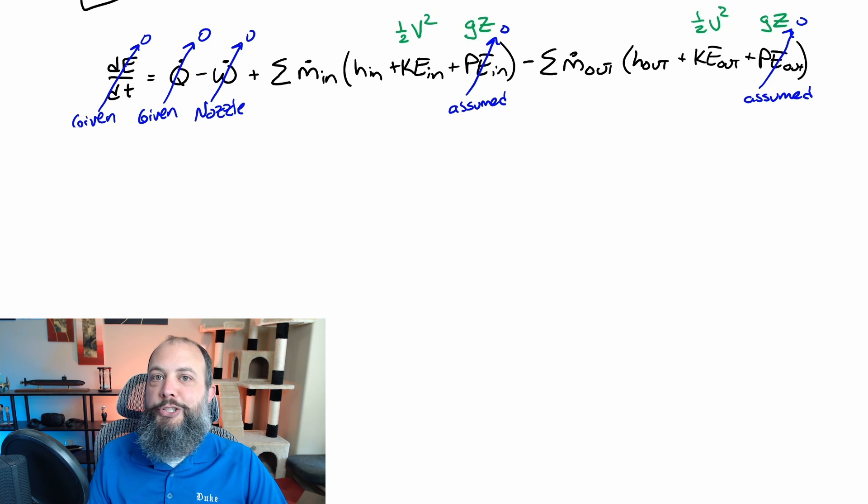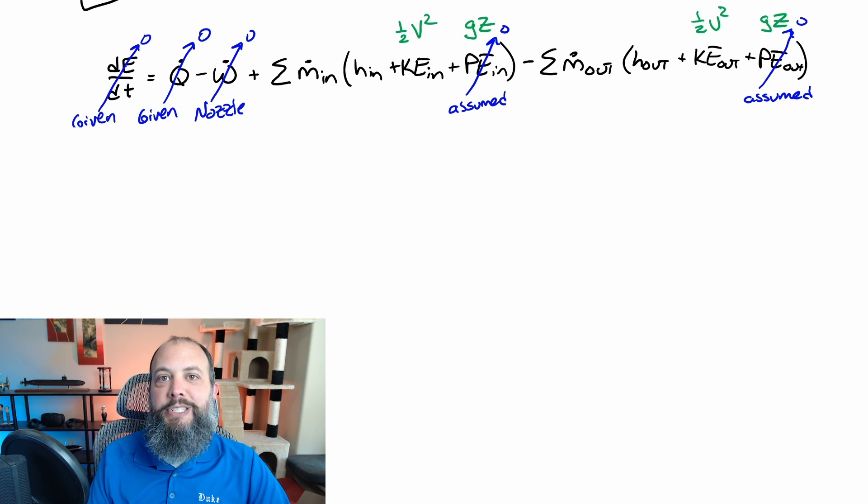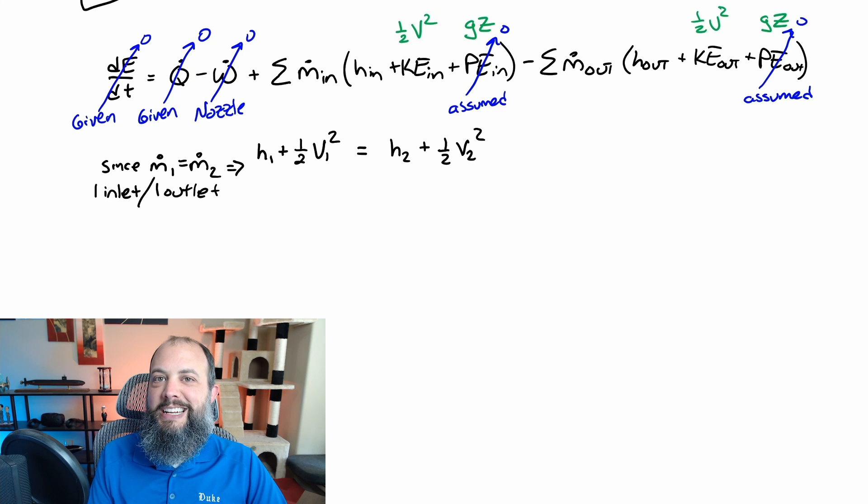And lastly, I'm going to assume that potential energy is zero, because nozzles are small. And even if we orient the nozzle directly up or down so that there would be a change in gravitational potential energy, that value would be extremely small compared to the temperature and pressure energy of enthalpy. Since there's only one inlet and one outlet in this problem, I can also cross off the mass flow rate terms, since they'll be equal to each other.